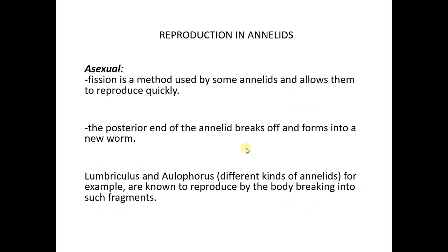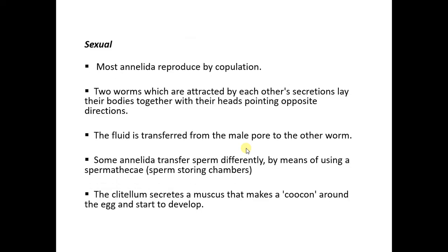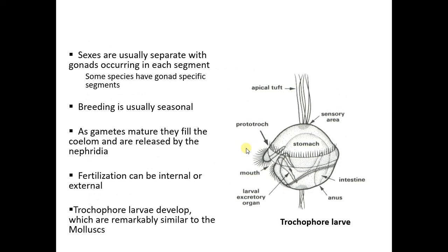Reproduction can be asexual — asexual reproduction is by fission, which can be binary or multiple. Sexual reproduction can also occur. In the clitellates, they lie side by side, one facing the other end, secrete a cocoon, exchange the sex material — the gametes — then separate and go and lay eggs. Their eggs develop into larvae, and that larva is called the trochophore larva. Please take note — that is the larva of annelids: the trochophore larva.